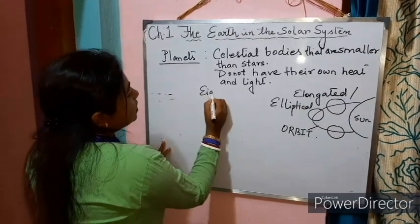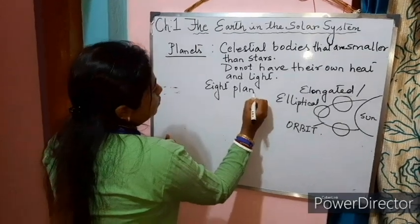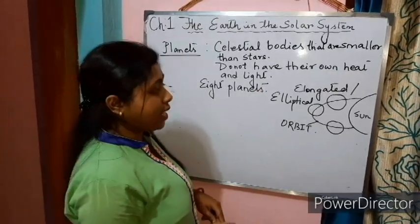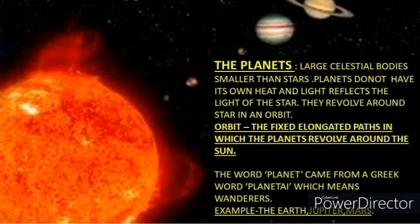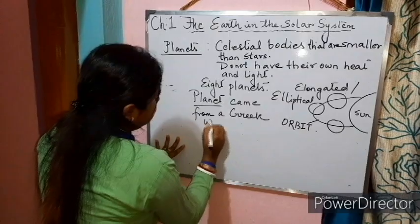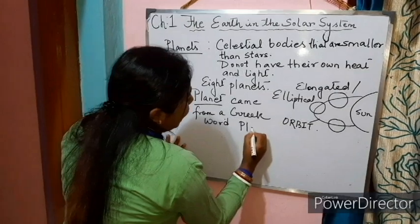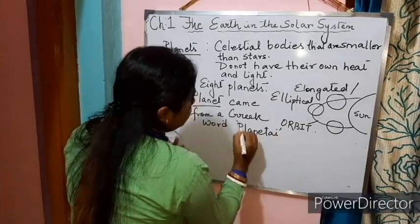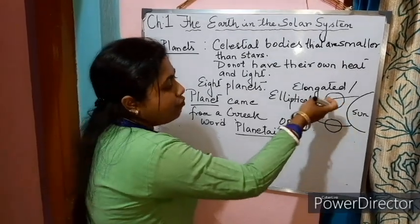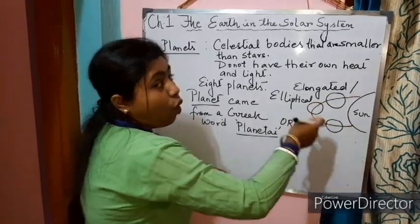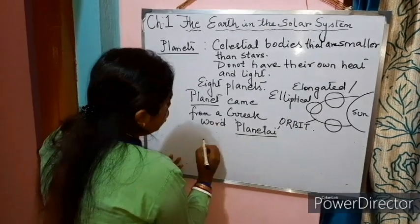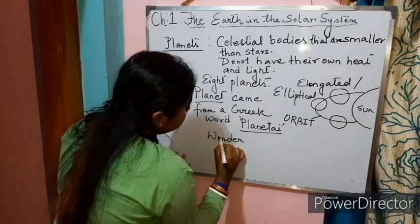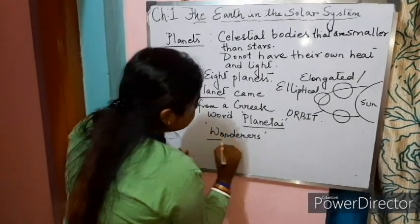There are eight planets in our solar system. The word planet came from a Greek word 'planetai'. Planets are not fixed at their position — they revolve around the sun in their own orbit, so we can call them wanderers. Planet came from the word 'planetai', which means wanderers.